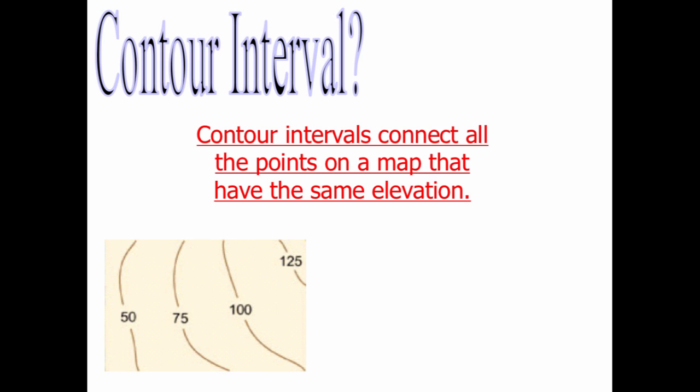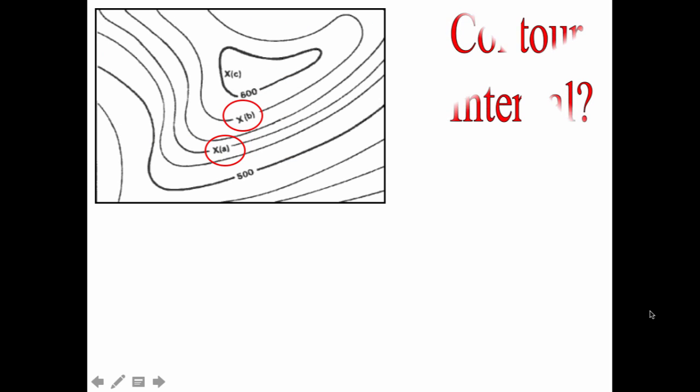I want you to look at this map here, but let's first write the definition of a contour interval. Contour intervals connect all the points on the map that have the same elevation. So if we look at this map here, I go from 50, 75, 100, to 125. What would you predict the contour interval is? It is 25. Noticing that if I was to walk from this line to here, I have increased my elevation by 25, maybe feet, maybe meters.